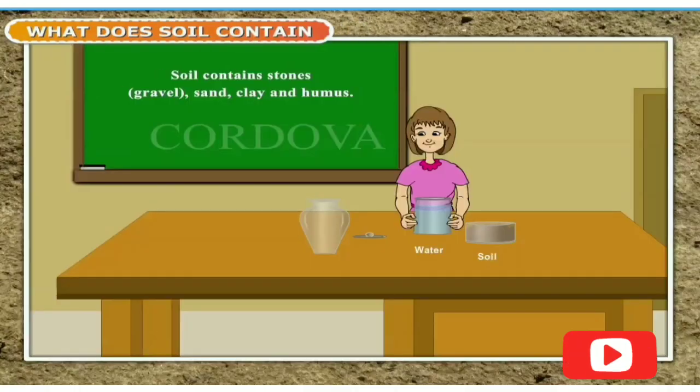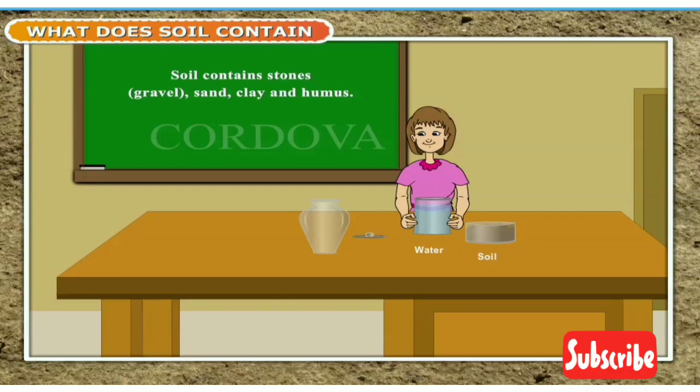What does soil contain? Soil contains stones, gravel, sand, clay and humus.